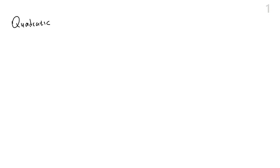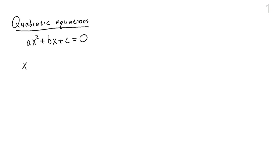Just to recall, so far in this course and in the college algebra course you have solved quadratic equations. We have solved them in many different ways. If we have a quadratic equation ax squared plus bx plus c equals zero, one of the ways is either to factor them, complete the square, or use the quadratic formula to solve them. So if we run into any quadratic equation we know how to solve them right away.